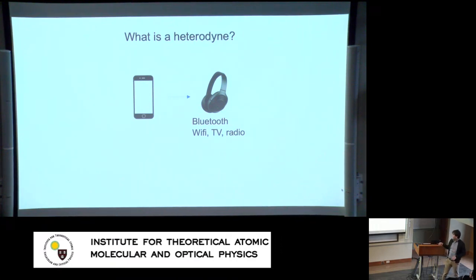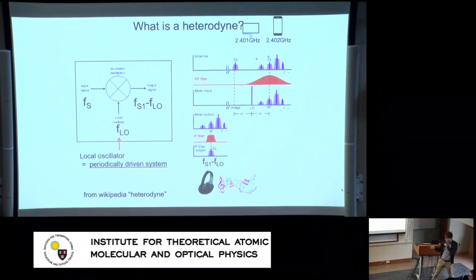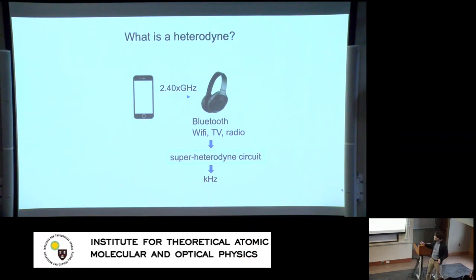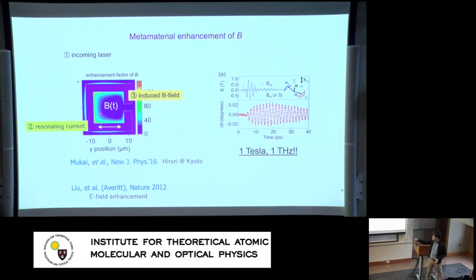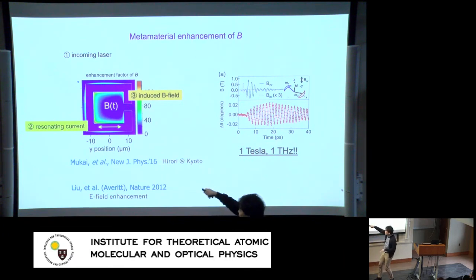Continuing with the introduction about heterodyning: a heterodyne is an electronic technique used in many different devices — it is a frequency converter. You can convert from the Wi-Fi frequency to the current used inside the device, which is typically in the kilohertz regime. An audience member asked: if dB/dt gives curl of E, how do you have all magnetic field without electric field? The answer is that in the metamaterial enhancement, the magnetic field component is made much stronger relative to the electric field — this geometry effectively separates and enhances the magnetic component.